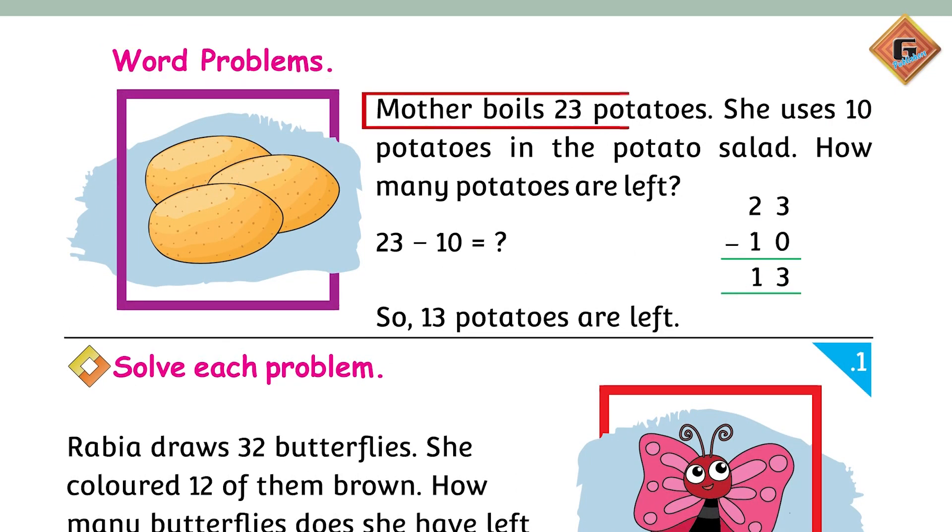is: Mother boils 23 potatoes. She uses 10 potatoes in the potato salad. How many potatoes are left? 23 minus 10 equals...very good! Just consider ke aapke 23 aur 10 column form mein likhe huye hain.